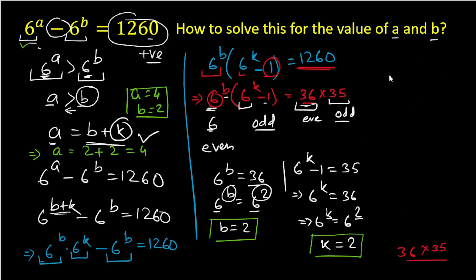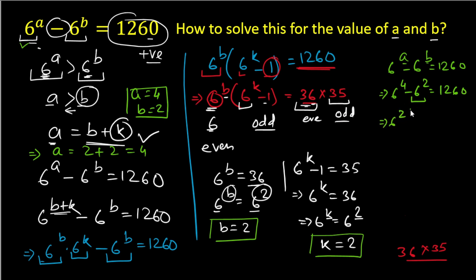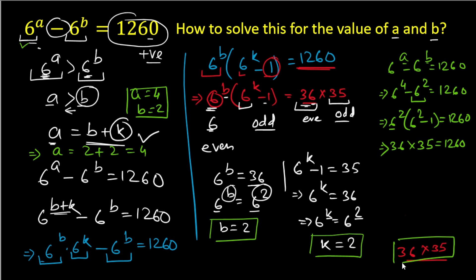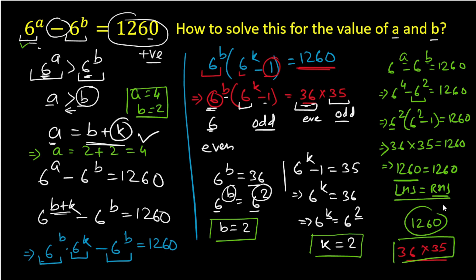We now verify: substituting a = 4 and b = 2 into the original expression gives 6^4 − 6^2. Factoring out 6² gives 6² × (6² − 1) = 36 × 35 = 1260. The left hand side equals the right hand side, confirming our answers are correct.